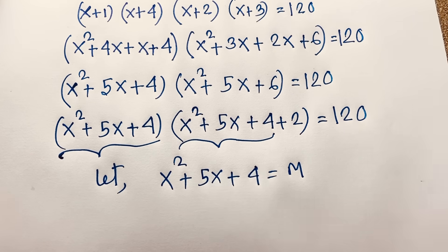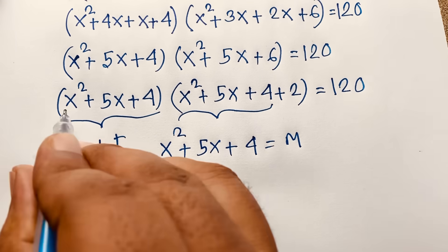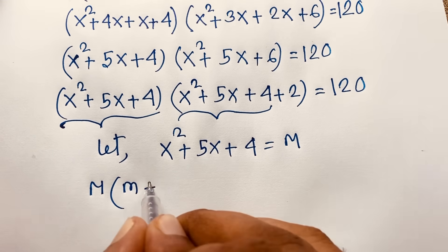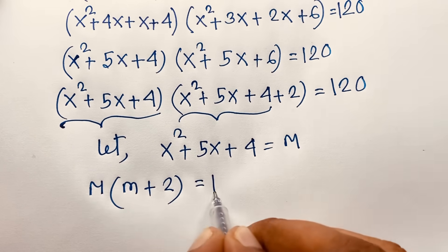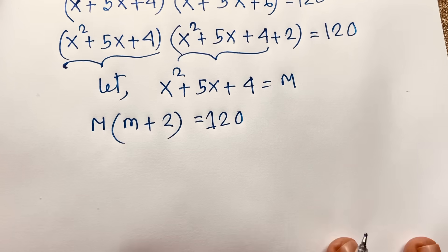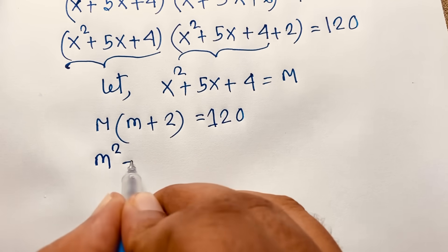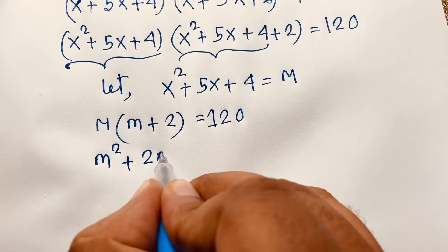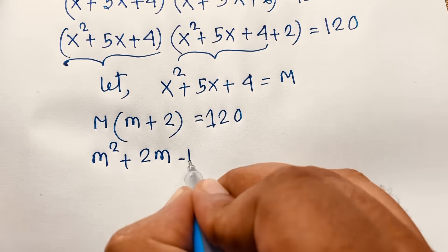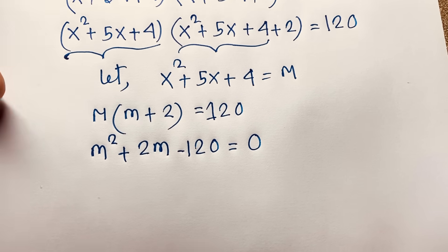With m = x²+5x+4, the equation becomes m(m+2) = 120, which expands to m²+2m = 120. Moving 120 to the left side gives m²+2m−120 = 0.